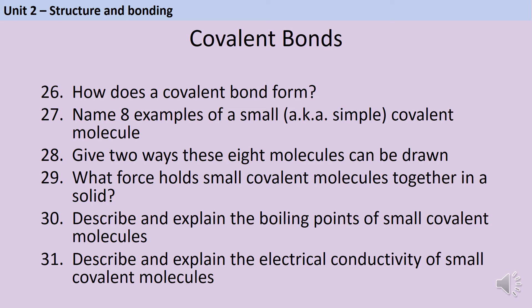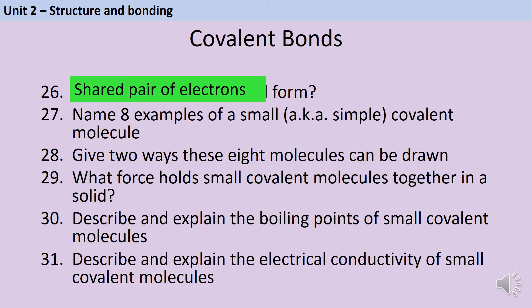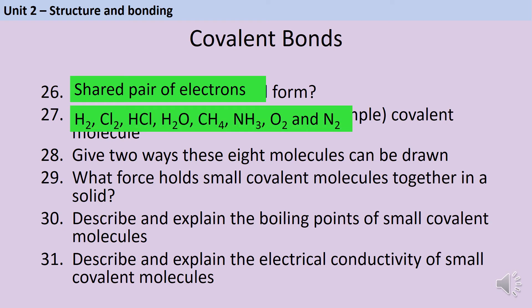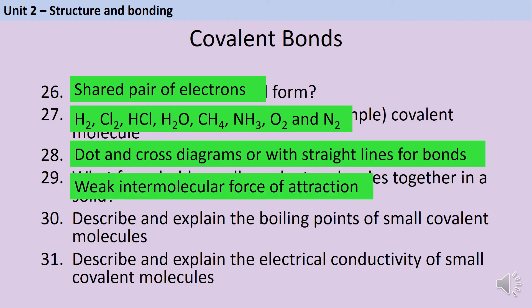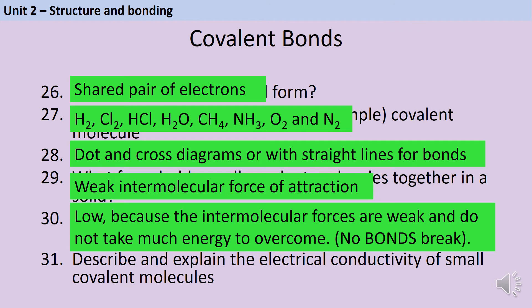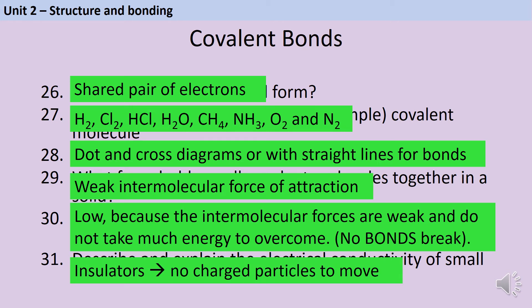Covalent bonds are shared pairs of electrons. The eight named examples in the specification of small or simple covalent molecules are hydrogen, chlorine, hydrogen chloride, water, methane, ammonia, oxygen, and nitrogen. These molecules can be drawn using dot-and-cross diagrams or with straight lines for the bonds, and they are held together by weak intermolecular forces. These small covalent molecules all have relatively low melting and boiling points because the intermolecular forces between them are weak and don't take much energy to overcome. It's really important to understand that it's the weak intermolecular forces between molecules that need to be overcome — not the strong covalent bonds inside the molecule; those do not break. Small covalent molecules cannot conduct electricity because the overall molecule has no charge, so no charged particles can move.